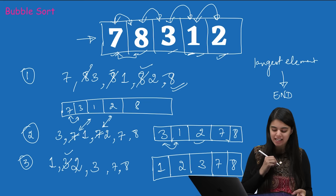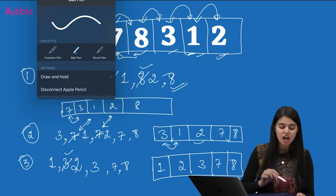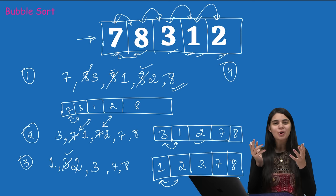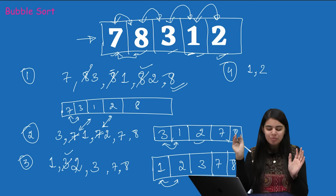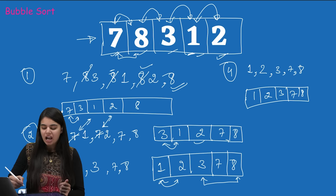We know the last three elements are already sorted. In the fourth loop, we compare only the first two elements: 1 and 2. Since they are already in order, no swap happens. After this pass, 3 is confirmed in the right position. The array is now fully sorted: 1, 2, 3, 7, 8. We have done n-1 comparisons (equal to 4) with pairwise comparisons each time.